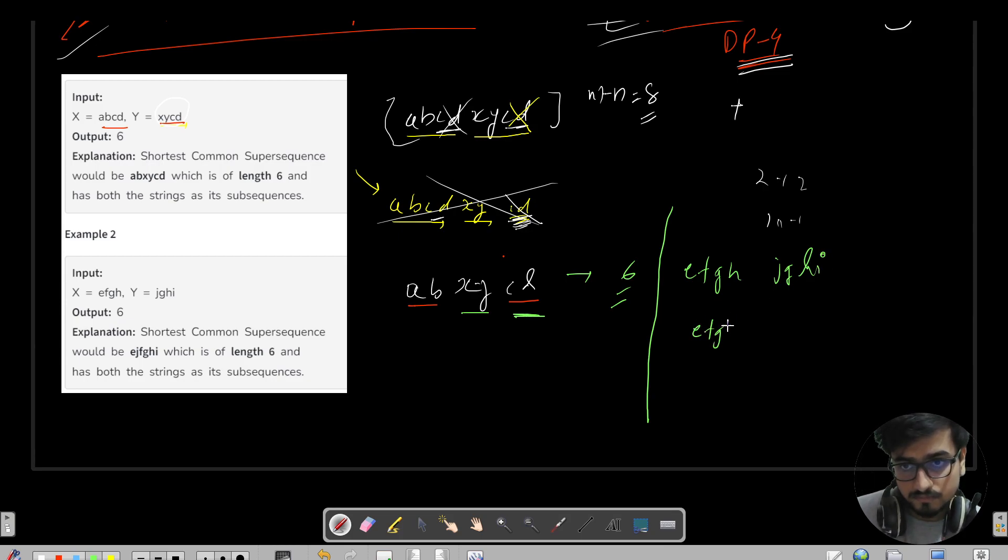We have another substring as EFGH and another has JGHI. One of the possible answers, we need both the strings so let us just club both the strings. Now what is the common subsequence? I can see the GH and GH is common here. That means I can remove one of them.